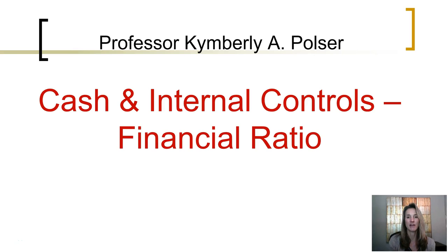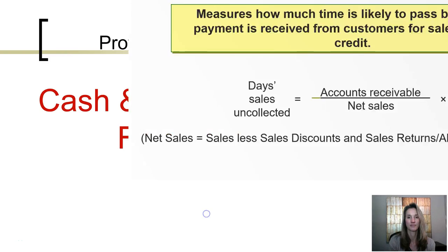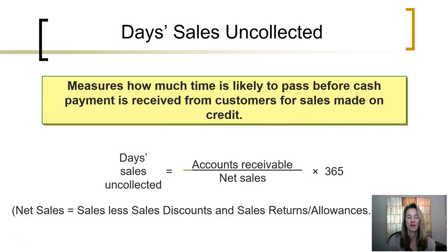This segment is going to look at a financial ratio related to cash. The days sales outstanding financial ratio measures how much time is most likely to pass before cash payment is received from customers for sales that are made on credit.